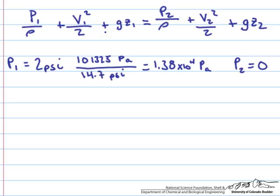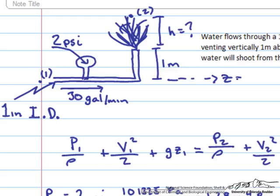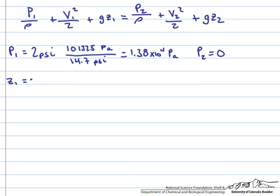If we look at the height component, we can arbitrarily choose this as our zero coordinate for Z equals zero. Z one will be equal to zero, and Z two then will be equal to this one meter plus the height that it shoots out of the vent. So Z two equals one plus H.